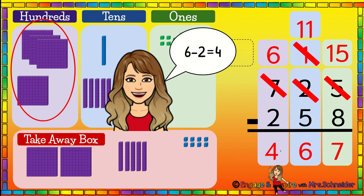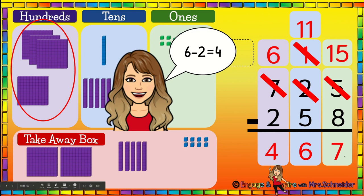So the answer to this problem is four hundred sixty-seven. We started with seven hundred and twenty-five, and we took away two hundred fifty-eight — and after we took that away, we still had four hundred and sixty-seven cookies remaining.